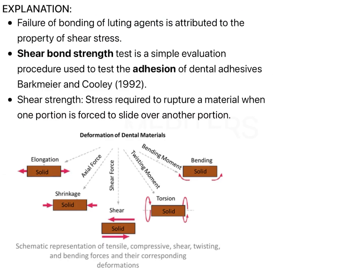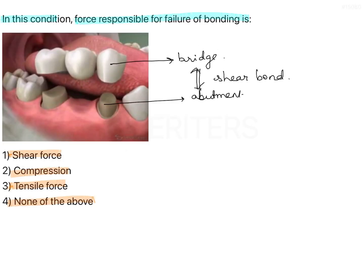What is shear bond? Tensile force is going to cause elongation of the material and compression is going to cause shrinkage of the material. Both of these properties are not relevant in terms of bond strength of a material. The bond strength of a material is determined by the shear force — that is the surface force of that cement. So if there is any failure of bonding between the cement and the restoration, it is mainly because of the deficit of the shear bond between them.